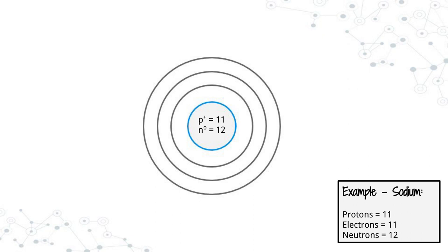Going back to our sodium example, we need to place 11 electrons in our diagram. In the first level we can fit only two, so I'm going to draw one dot to represent one electron and another dot to represent the other. As long as you have two electrons in that first shell, that's what matters.